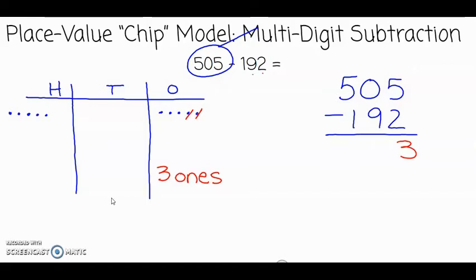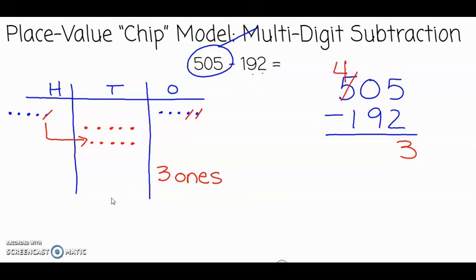Now I look at the tens. I see that 192 has nine tens. But when I look at my place value chart, I don't have any tens to take away from. So I'm going to go to the hundreds column and unbundle one of these hundreds. One hundred has ten tens. If we look at the algorithm, we will see that we have zero tens minus nine tens, so we need to go to the hundreds column, unbundle one of those hundreds, and bring it over to the tens column. There are ten tens in a hundred.